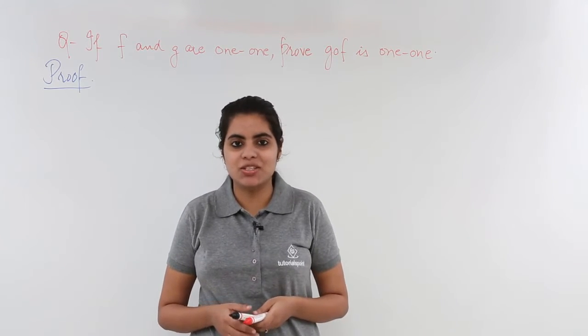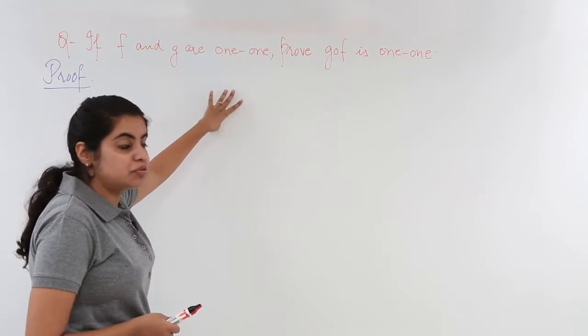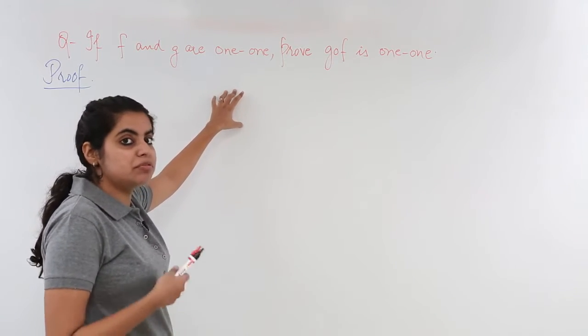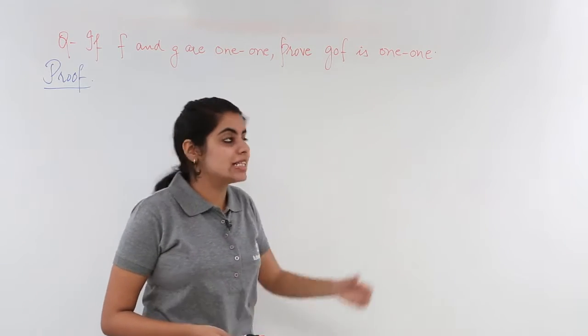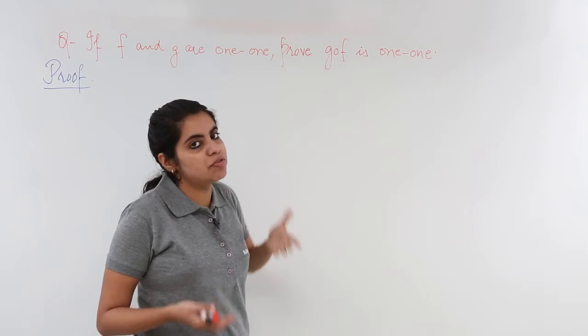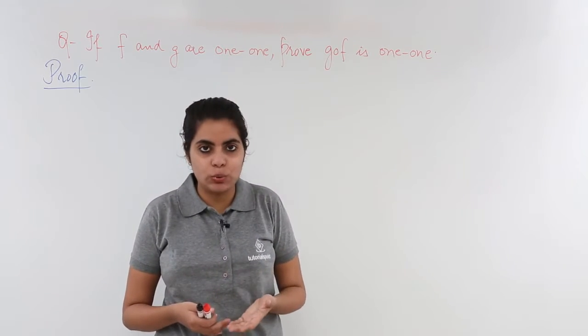Let's see what the question has to say. If f and g are one-one, that means they are one-one functions, prove gof is one-one. This is read as gof, and g circle f. Also, by this time you must have been knowing what is gof.